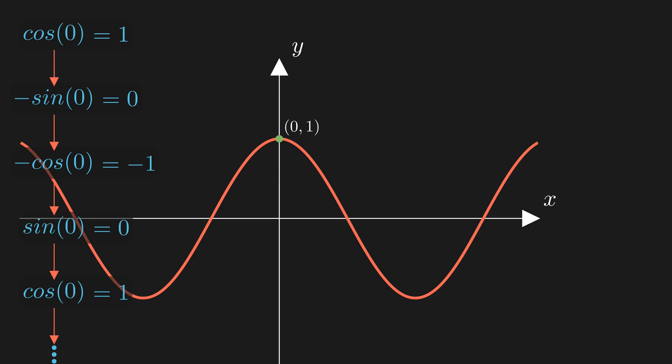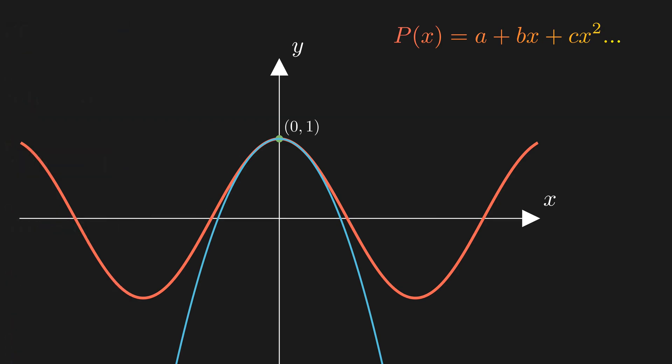Our goal is this: to find the polynomial that best resembles the cosine function around x equals 0. In other words, among all possible polynomials, we want to find the one that most closely matches cosine near 0, say a polynomial like a plus bx plus cx squared. Of course, we can keep adding more terms if we want. First of all, if this polynomial is going to be any good, it must pass through the point 0, 1, right?